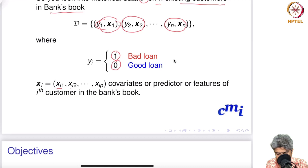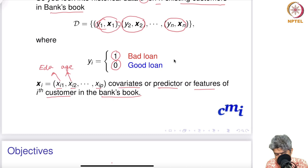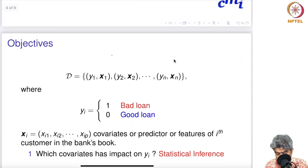Here xi is (xi1, xi2, ..., xip), which are the covariates, predictors, or features of the i-th customer in the bank's book. Features could include education, age, whether the customer has any previous loan, and so on — all the information a bank typically asks for.